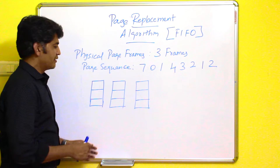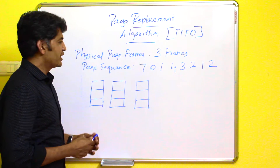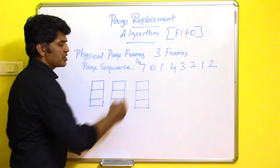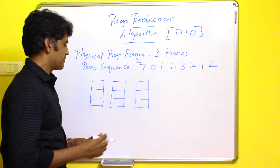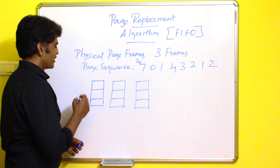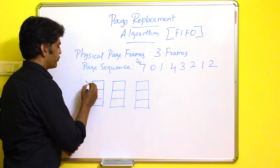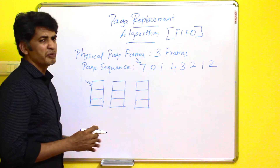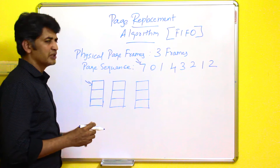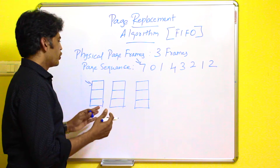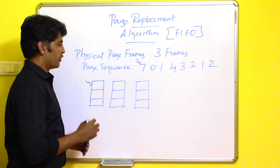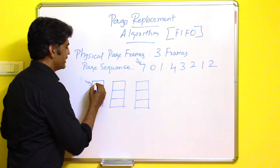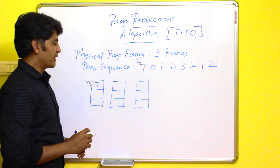These are the physical frames — the three frames. We will start with the first page. This is the first page required to start the process. It will always start with a page fault because initially all the frames will be free, so no page information will be available in the physical frame. After the page fault, the new page will be placed in the physical frame.